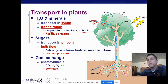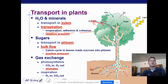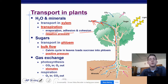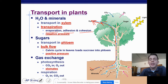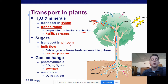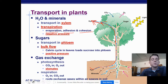Gas exchange happens through photosynthesis — plants bring carbon dioxide in and exhale oxygen, and that happens in the leaves through tiny structures called stomata. Plants also undergo cellular respiration just like animals, so they also need a little oxygen in and release CO2 out. Those two processes are kind of opposites and plants do both. Photosynthesis is usually the dominant one. Roots also exchange gas with the soil, so there is gas in the soil as well.